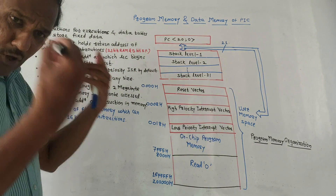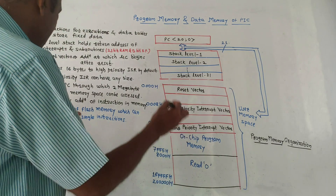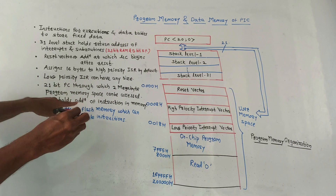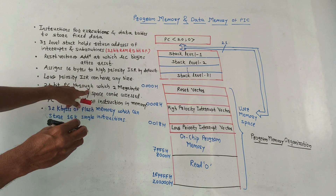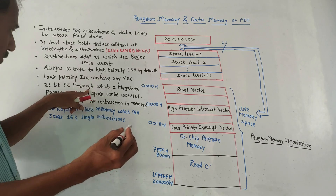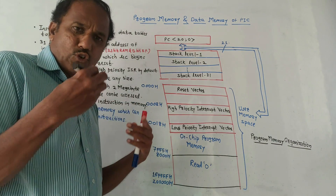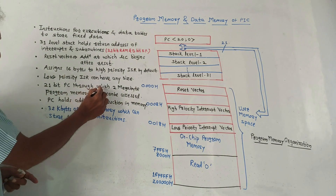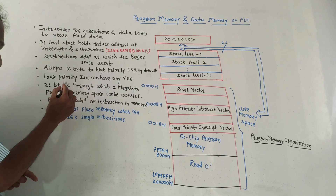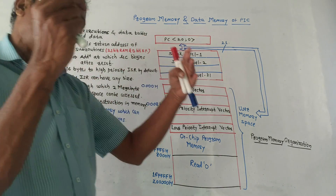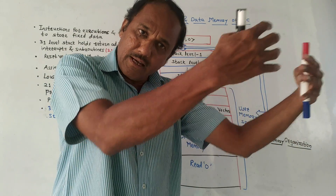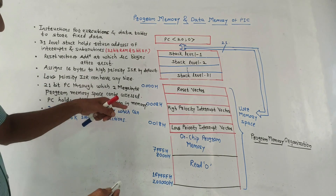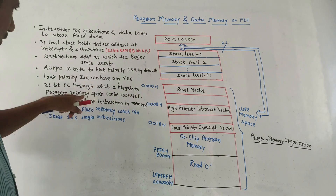The microcontroller assigns 16 bytes to the high priority ISR (Interrupt Service Routine) by default. For the low priority interrupt service routine, the size is not fixed, so the low priority ISR can have any size. A 21-bit program counter (PC) is used — through which 2 megabytes of program memory space can be accessed. The program counter holds the address of instructions in memory.